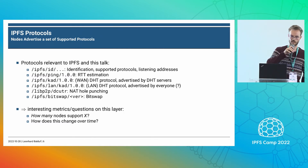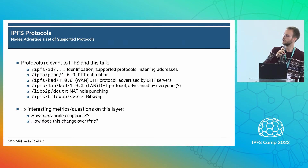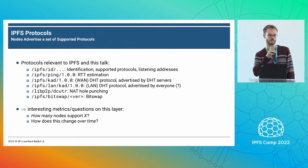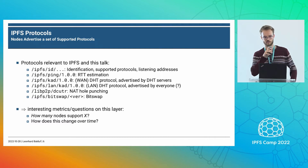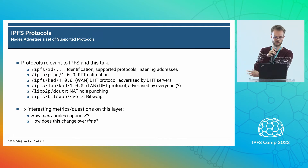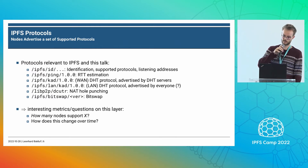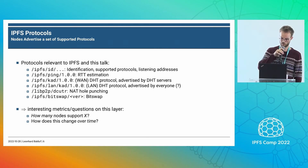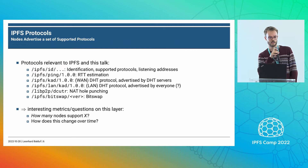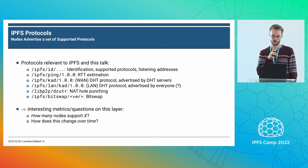Nodes on the network advertise what protocols they support — basically what protocols they can speak. There are a lot of them, but a bunch are important to IPFS. For example, there's the ID protocol for node identification — public key exchange and stream handling. There's the ping protocol which estimates round-trip times, the DHT protocol, a NAT hole punching protocol, and then there's Bitswap, which I will talk about.